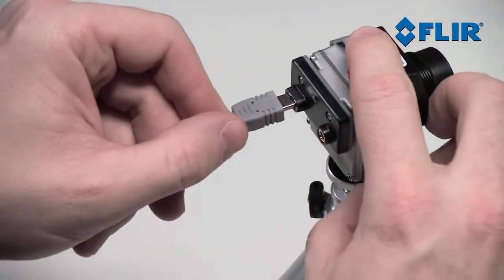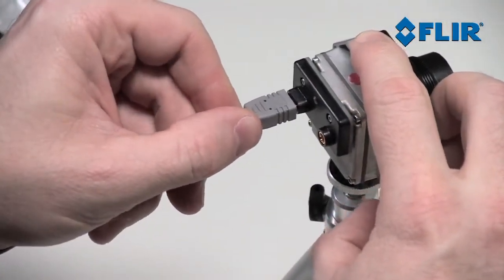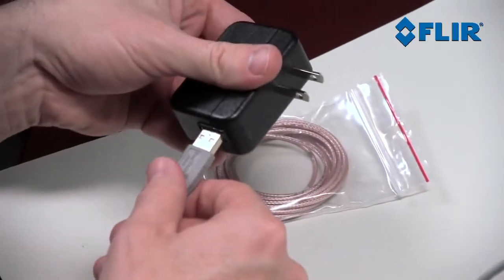Plug the USB mini cable into TAU-2 and plug the standard USB end into the power adapter. Go ahead and plug in the power adapter now.